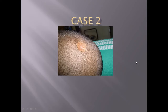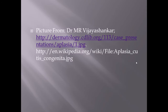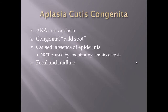All right everybody, case two — this is going to be a good one. I did learn from my mistakes; I changed the works cited for this one so you can't cheat. Does anybody have an idea of what we are looking at here? It's a newborn with a defect on the top of their head, looks midline. This is cutis aplasia, also known as aplasia cutis congenita, meaning it will be present at birth.